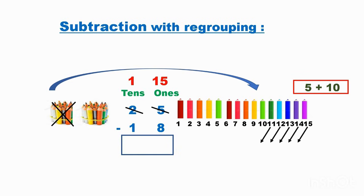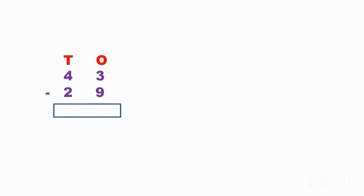Take out eight from fifteen: one, two, three, four, five, six, seven, eight. How much is remaining? Seven. So write down seven in the ones place. Now one minus one is zero — when I take out one ten, one ten is remaining, so zero tens. This way we solve the problem.